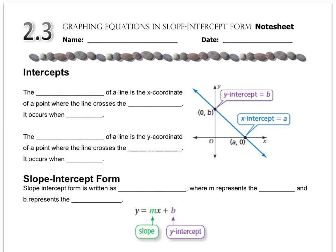But when you want to graph a line, you can use these things called intercepts. The x-intercept of a line is the x-coordinate of a point where the line crosses the x-axis. It occurs when y equals 0. So let's look at this picture. The x-intercept is right here. The y value is 0, and it's hitting at the x-axis at this point, something comma 0.